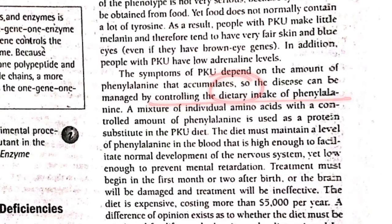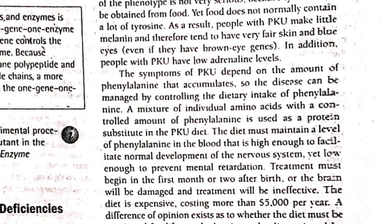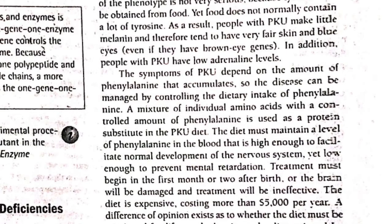The disease can be managed by controlling the dietary intake of phenylalanine. A protein substitute is used in the PKU diet. The diet must maintain a level of phenylalanine in the blood that is high enough to facilitate normal development of the nervous system, yet low enough to prevent mental retardation.